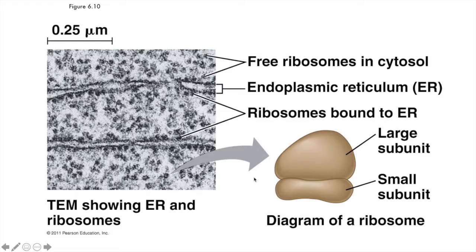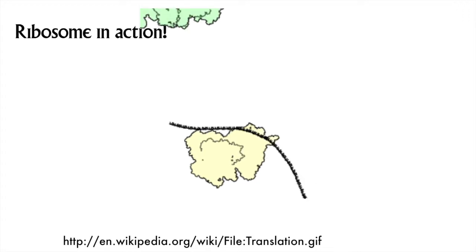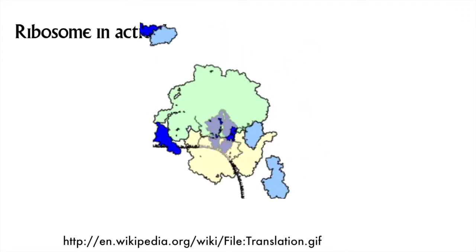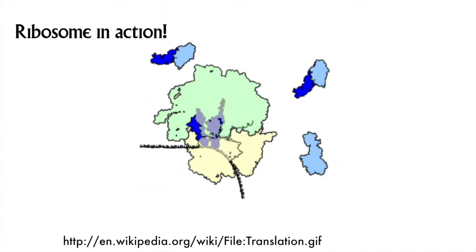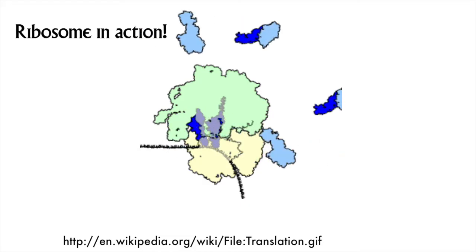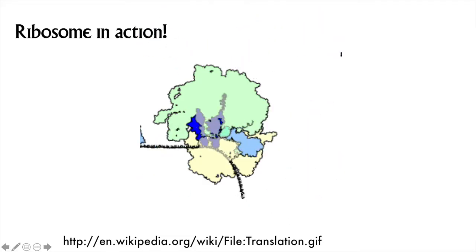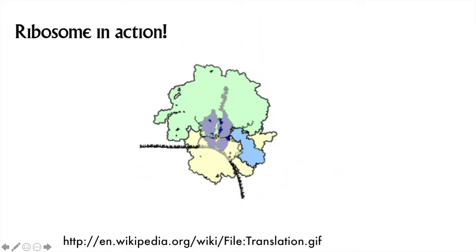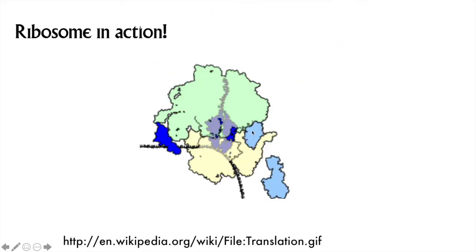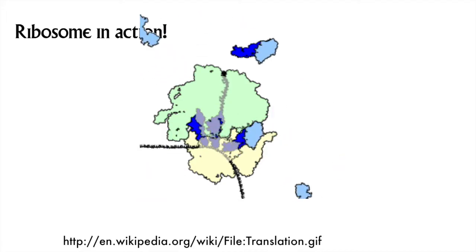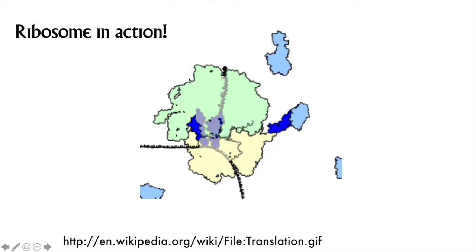Here's that hamburger bun-like diagram again. This animated image shows the ribosome doing its job decoding a messenger RNA. The black line is the messenger RNA, the yellow blob is the small subunit, the green thing is the large subunit, and the blue things are called transfer RNAs or tRNAs, which bring the amino acids in to get peptide bonded. As the polypeptide forms, you can see it growing out of the top of the large subunit.